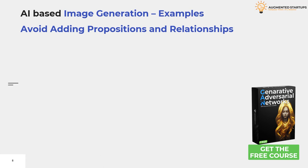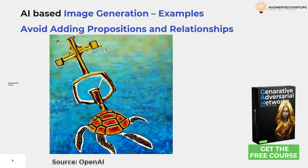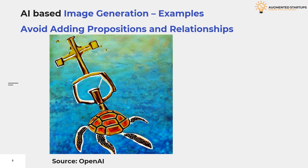We need to avoid adding propositions and relationships while providing text prompts to AI-based image generators. For example, the prompt 'a turtle following a metal anchor to the bottom of the sea, expressionist painting' produces a result that is clearly not what we are looking for. Getting relationships right is a major challenge for the AI, because the AI does not always understand how things are connected.